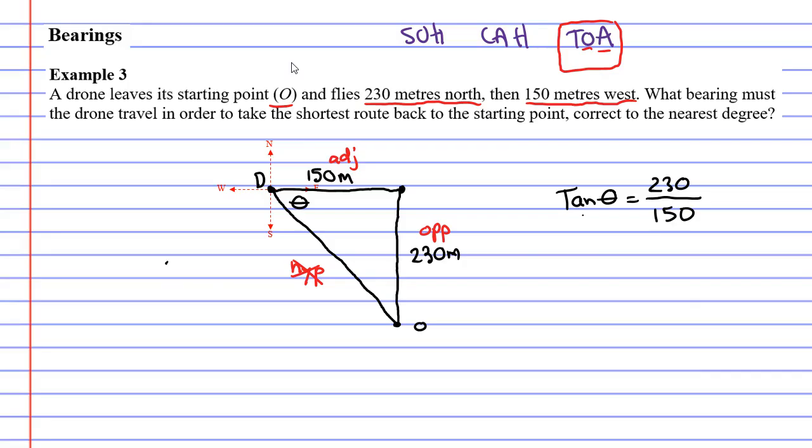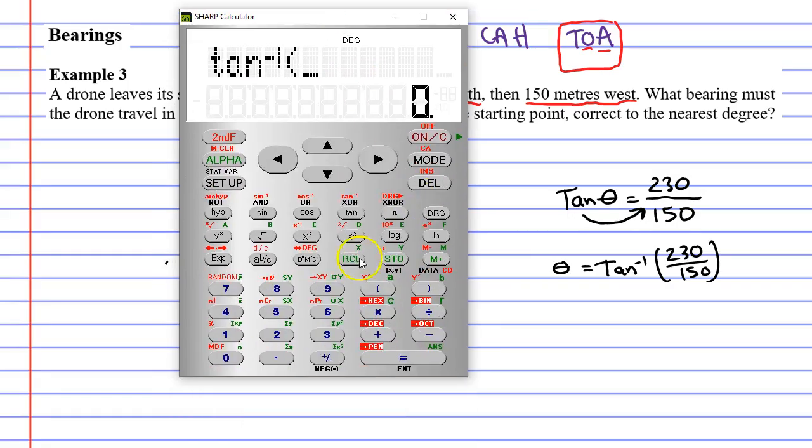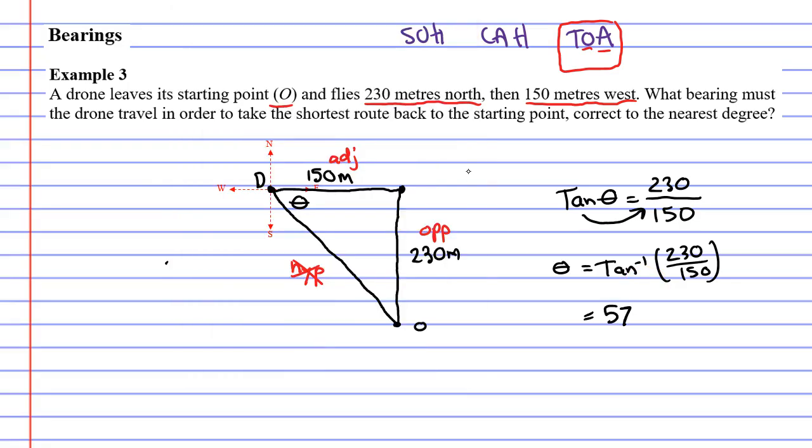So if we want to figure out what theta is, we need to bring TAN to the other side, meaning we need to use inverse TAN, and we need to put our fraction in brackets. Very important that you do that. Second function TAN gives us inverse TAN. Open up our brackets, 230 divide 150, close the brackets, equals, and we get about 56.8. Now it wants it correct to the nearest degree, so we're going to round it up to 57 degrees.